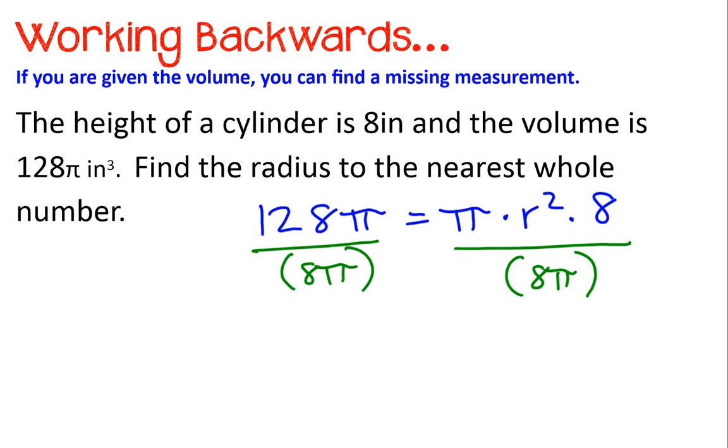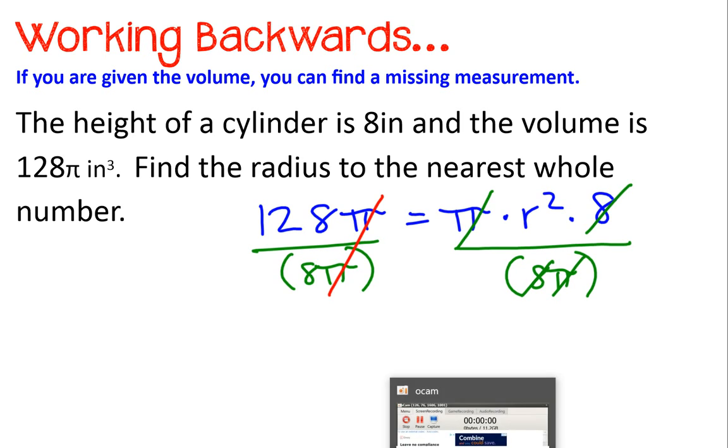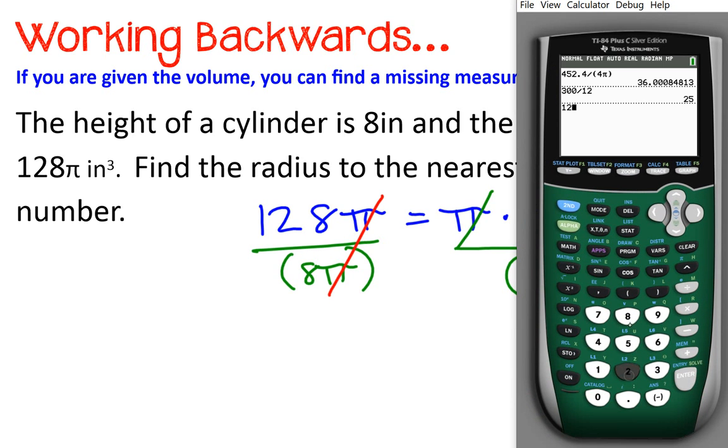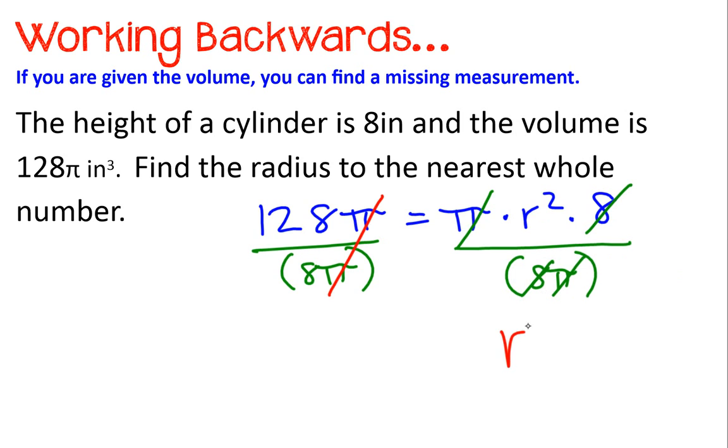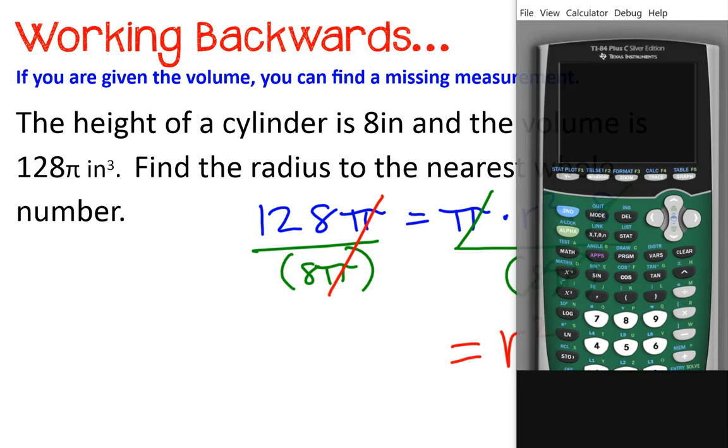Now, what I like about this one is when the answer is written in terms of pi, you can just cancel it out right from the beginning. Pick up your calculator. 128 divided by 8. And there's your radius squared. Remember, this is a radius squared. What was it, 16? Yeah.